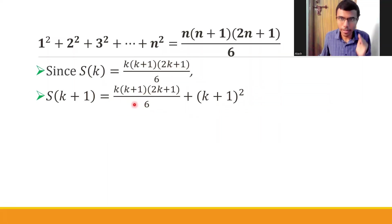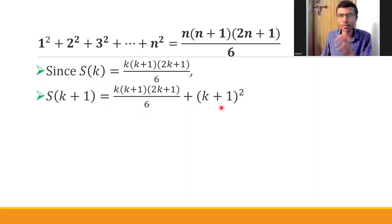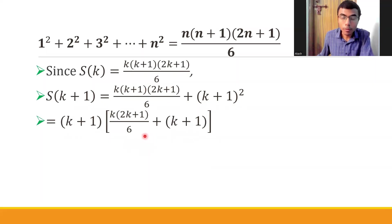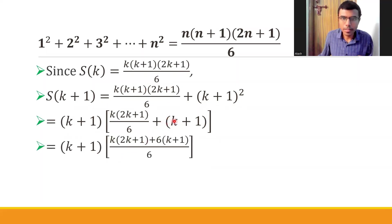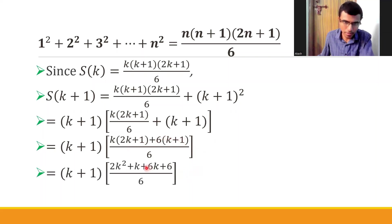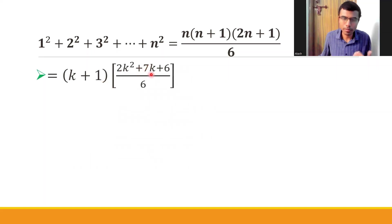Now listen carefully — this is the actual simplification part. In the two terms k(k+1)(2k+1)/6 and (k+1)², we can take (k+1) as common factor, since (k+1)² = (k+1)(k+1). Taking (k+1) common leaves k(2k+1)/6 + (k+1). Taking LCM of 6, the numerator becomes k(2k+1) + 6(k+1), which expands to 2k² + k + 6k + 6 = 2k² + 7k + 6.